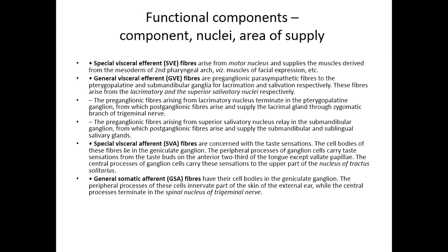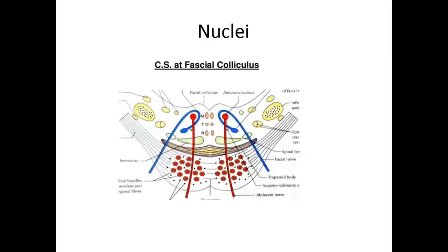After describing the functional components — four in total: two special, two general: special visceral efferent, general visceral efferent, special visceral afferent, and general somatic efferent — we talk about the various nuclei. The nucleus of the facial nerve is situated in the lower part of the pons. The abducent nucleus is nearby, and the fibers of the facial nerve nucleus take a turn around the abducent nucleus and come out at the junction of pons and medulla. This turning around is called neurobiotaxis.